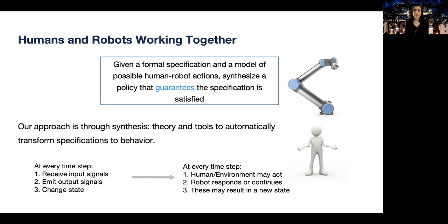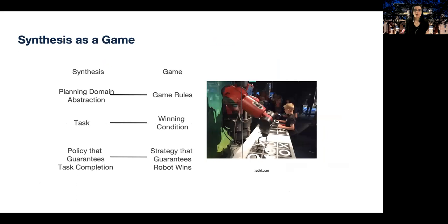The way we solve this problem is through synthesis. What is synthesis? Given a specification, a synthesis technique automatically outputs a satisfying behavior. This could be in the form of a circuit, a program, or a policy. In a reactive system, we have a system that receives input signals, emits output signals, and may change its state. In our setup, we have a system where the human, that is the environment, may act. The robot may respond or continue, and we may have a new state. We solve our synthesis problem by converting it to a game. Think of the planning domain as the rules of the game, while the task is the winning condition of the game.